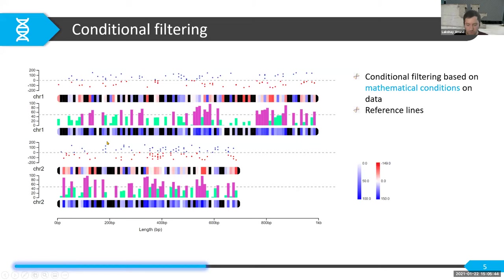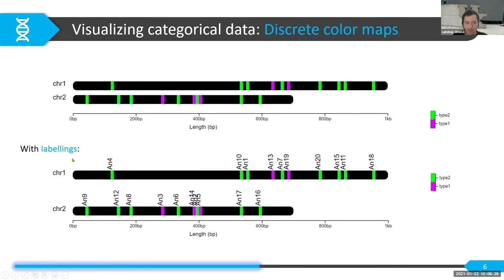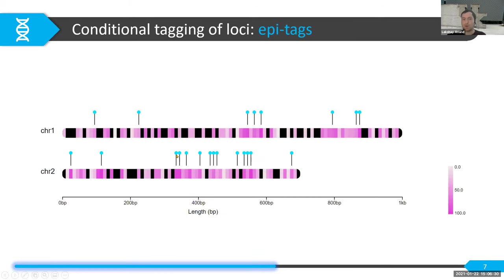The same conditional filtering can be applied to bar plots, and you can add reference lines. For categorical data — whether per feature or by group, like annotating genes and SNPs together — each category gets a color, the legend shows the category and color, and there can be any number of categories. You can also add labeling. The conditional tagging feature lets you tag loci based on any condition, which is great for mark-based data like epigenetics methylation data.